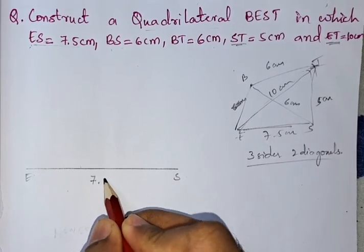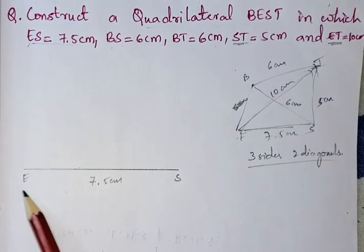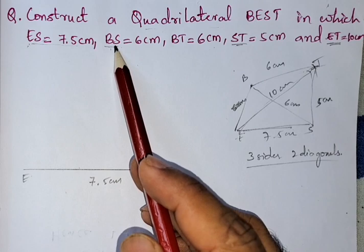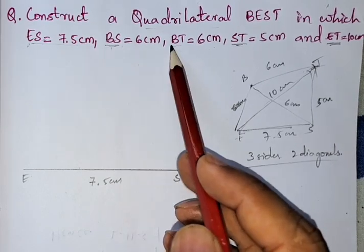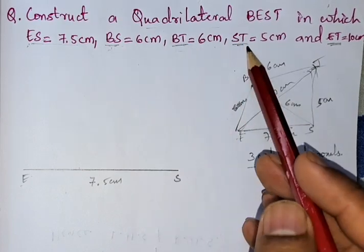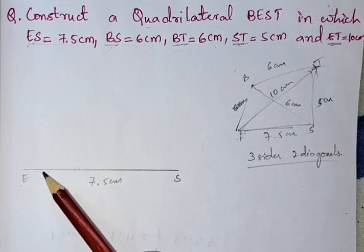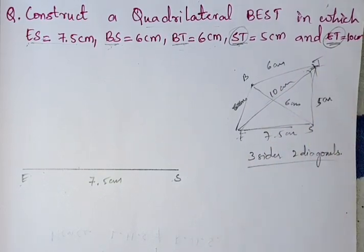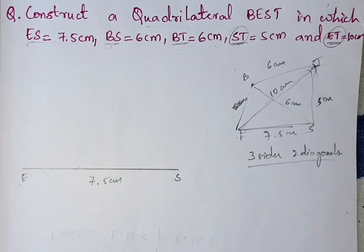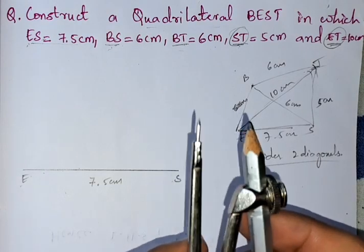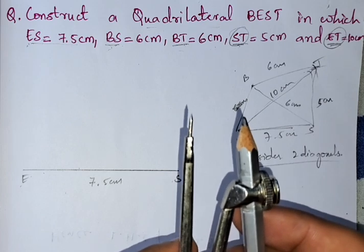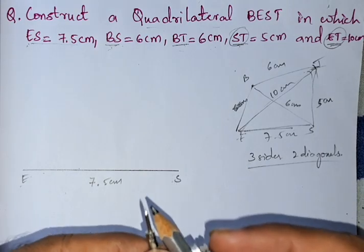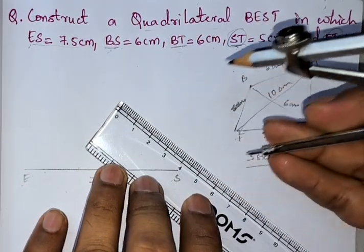Now from E and S we need to find the common point T. We are not taking the point B with E since we don't have that measurement. Both E and S share point T, so we will use ST and ET. To take ST, we use the compass — the pencil tip and needle tip should be at the same level. Then we take the measure of 5 cm.